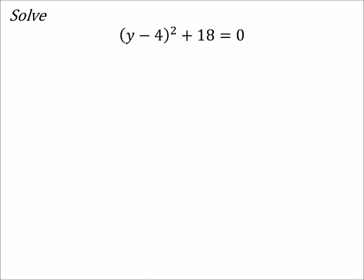Alright, well same thing on this one - we've got that binomial that's being squared, it's added to something, and it equals zero. The problem with this is our first instinct is to just take the square root of both sides.